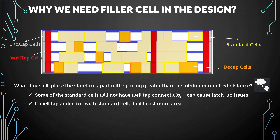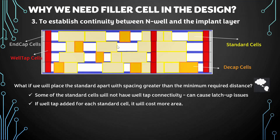Also, if we add a well tap for each standard cell separately, it will cost more area. To fix this, we need continuity between the N-well and the implant layer. That gives us the third reason to have a filler cell — to maintain continuity between N-well and the implant layer, which also makes it easier for foundry people to create masks and ensures better reliability and DRC mitigation.